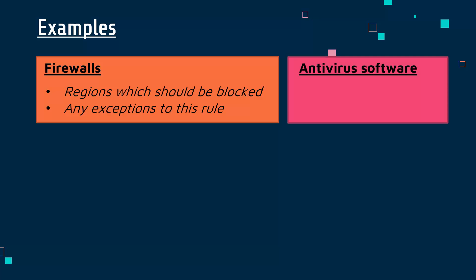Another example: for antivirus software, you might outline how to set it up, how to use it, and how to do scans. As a parameter, you might state how frequently scans are expected to be performed. If you don't specify this, it leads to inconsistency — one employee might scan every single day, while another might do it every two months. That inconsistency can clearly be a problem.